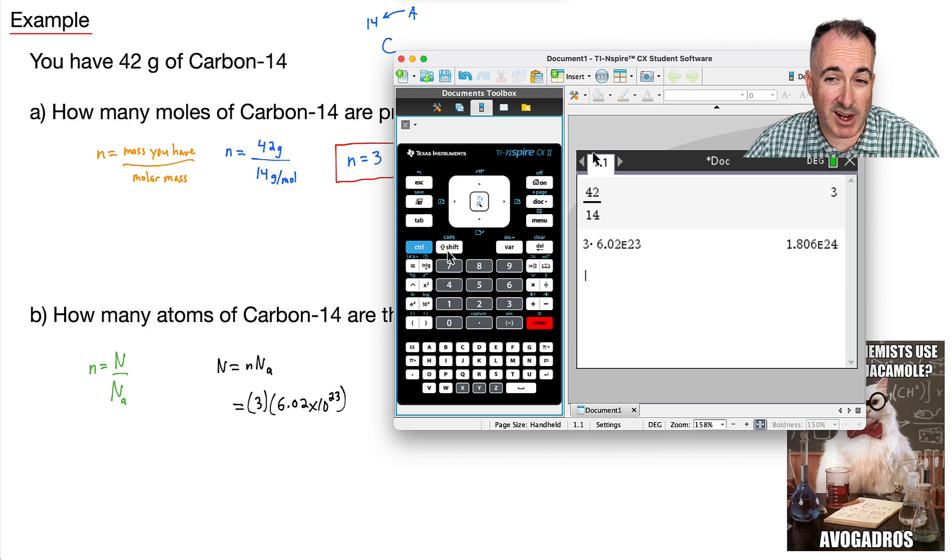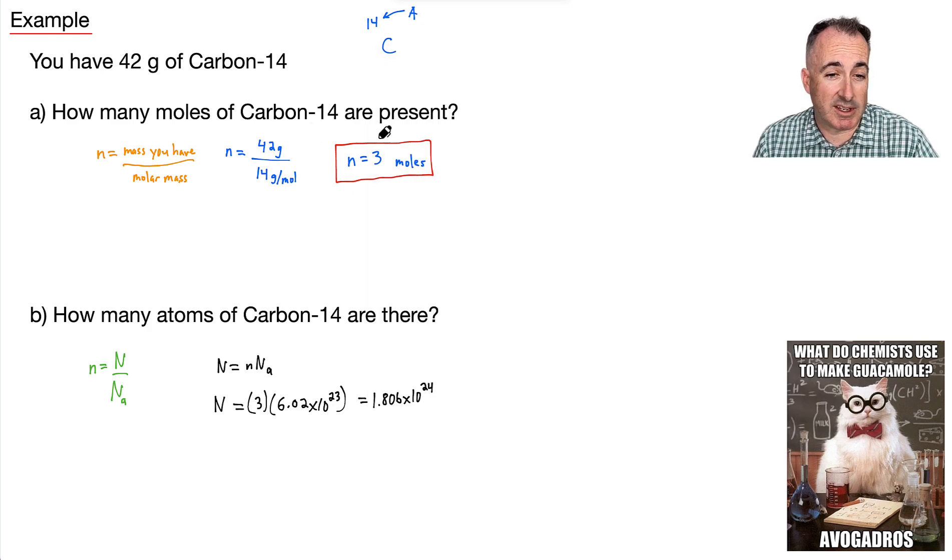I end up with this number, 1.806 times 10 to the 24 atoms. Now, how many significant figures am I allowed? Well, I'm given 2 here, and that's about it because it's a 14. So that means my answer to 2 significant figures will be just 1.8. I'll say that's times 10 to the 24. And it helps to put units, I'll say atoms. And there we go, we're done.